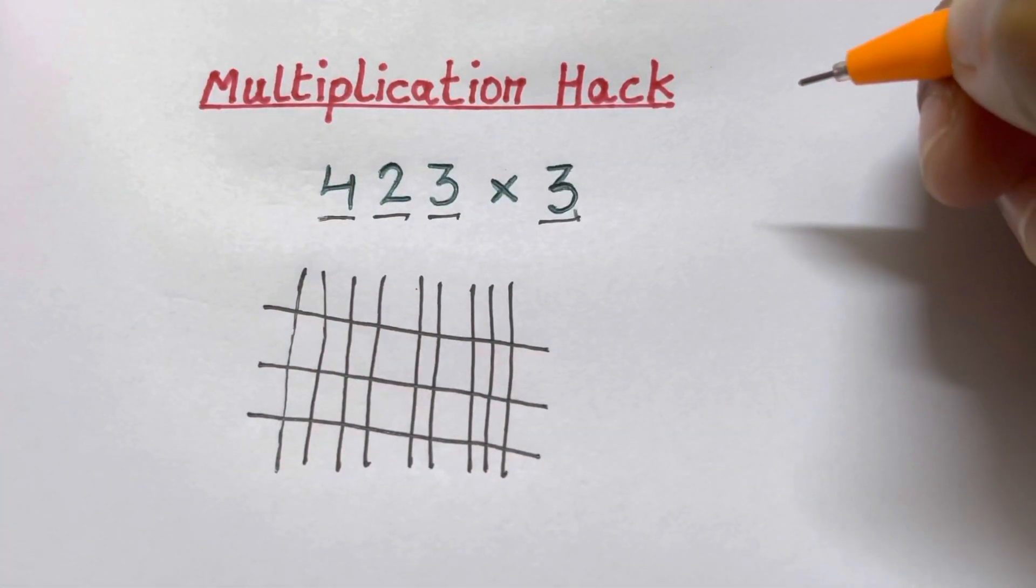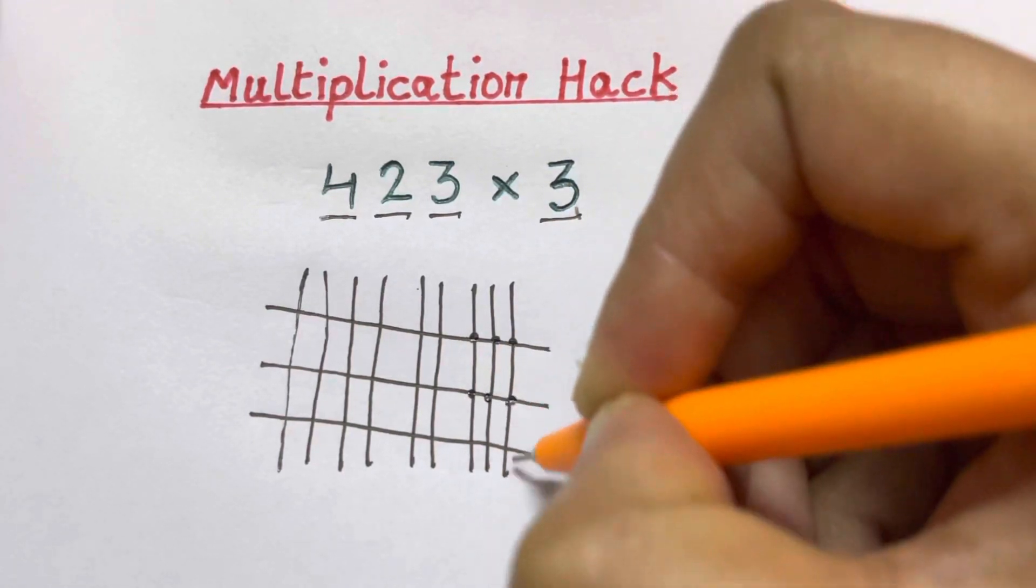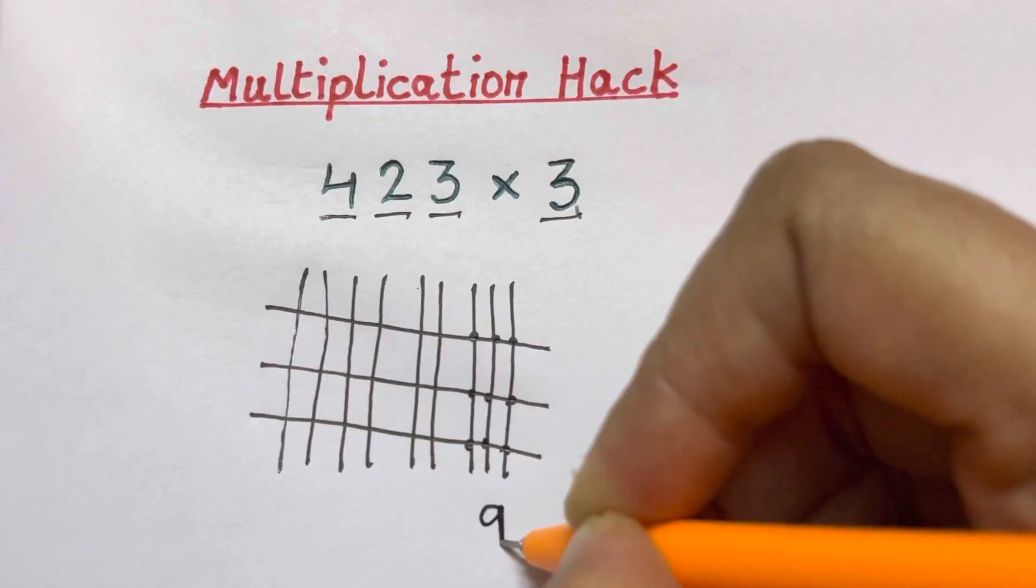Now we're just going to count the dots. 1, 2, 3, 4, 5, 6, 7, 8, 9. So total of 9 dots.